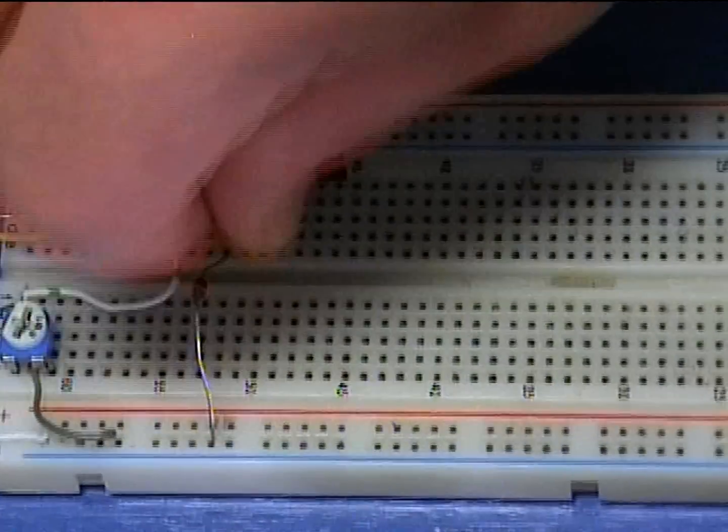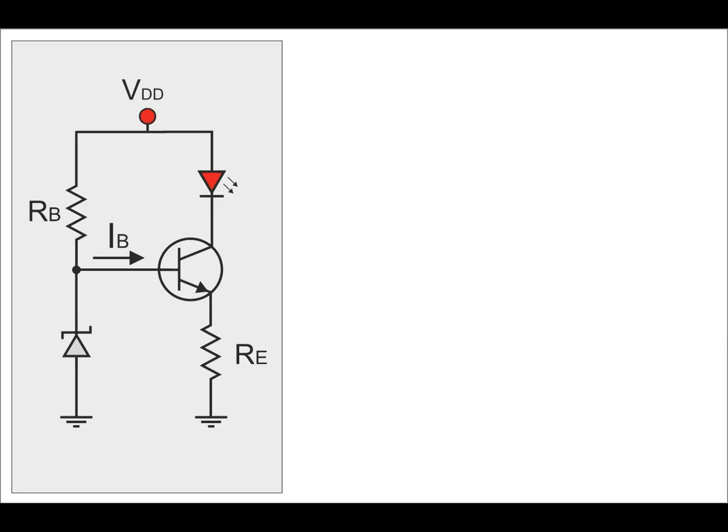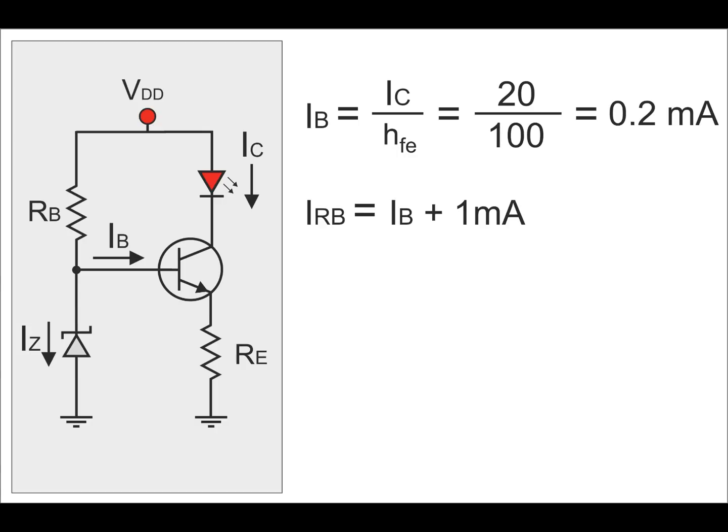To choose a base resistor, we will need to know the base current and the minimum Zener current. For the base current, we will use the collector current and the hybrid parameter HFE. Since we want to supply 20 mA to the LED, the collector current is 20 mA as well. The HFE for the worst case scenario is 100, so the base current is 0.2 mA. We will add another 1 mA to this value for the Zener diode to have proper voltage regulation. The total current at the input side is therefore 1.2 mA.